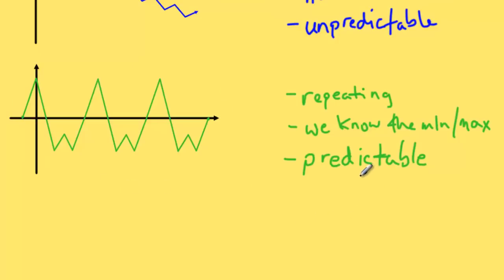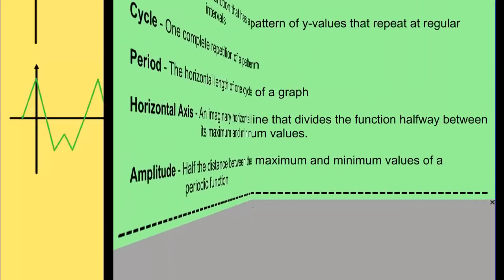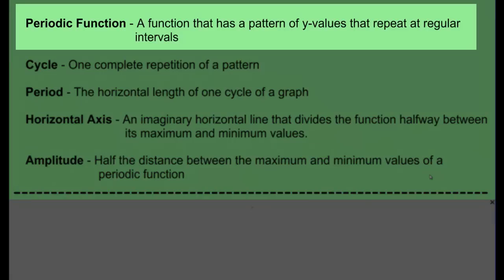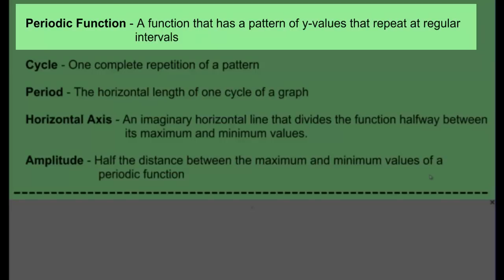For this lesson and the next few lessons, we're going to be looking at examples of functions that exhibit periodic behavior, or what we call periodic functions. Let's get some definitions down. A periodic function is a function that has a pattern of y values that repeat at regular intervals. The first two functions we looked at were not periodic — the first didn't repeat at all, the second repeated itself but not the same y values because it was sloping. But the third one had a distinct pattern of y values repeating at regular intervals — every five units in the case I used.